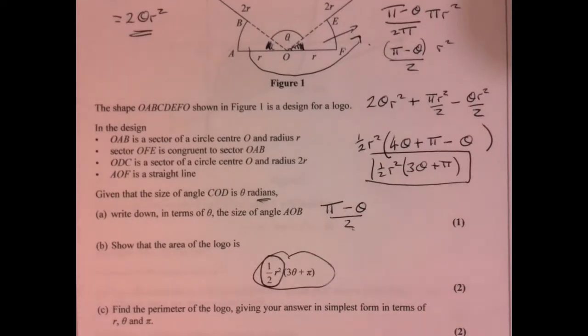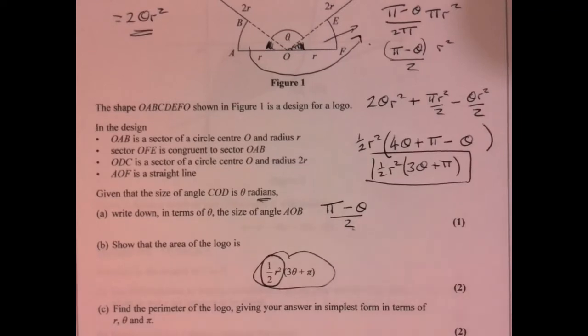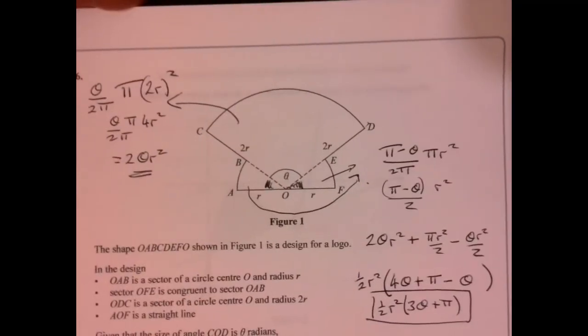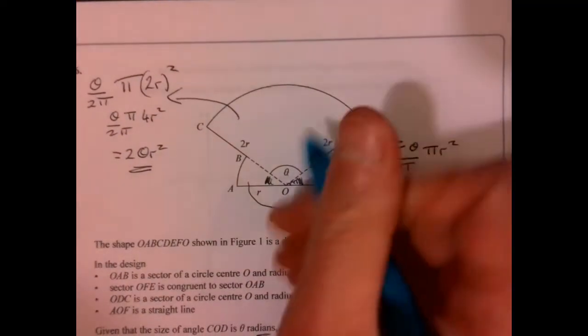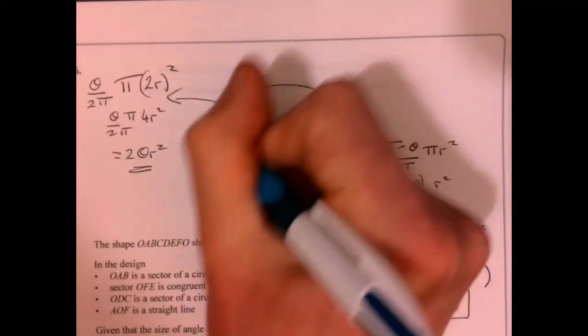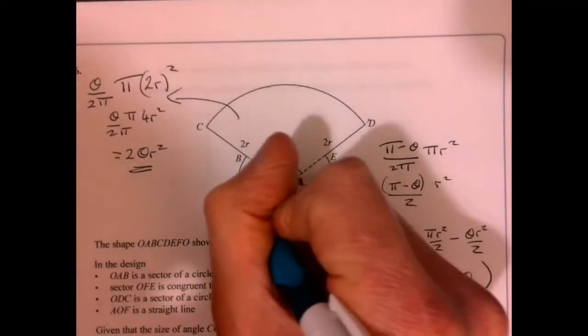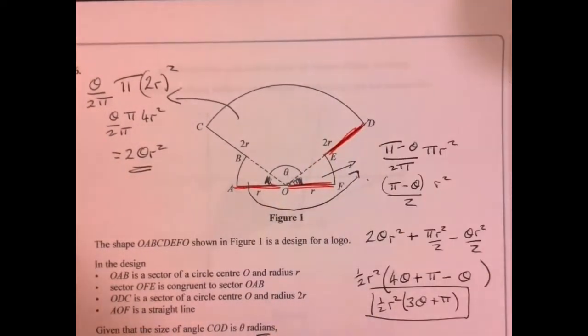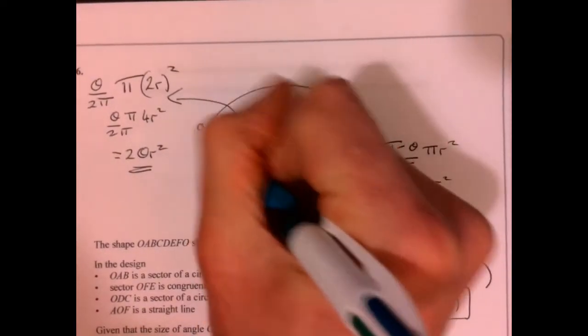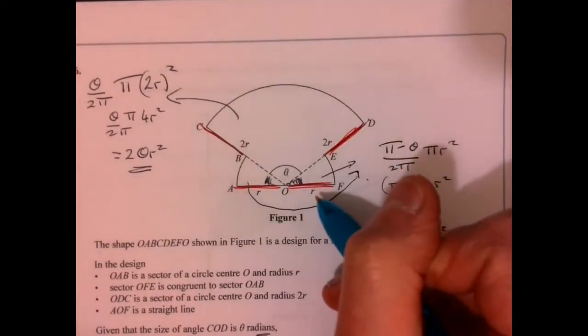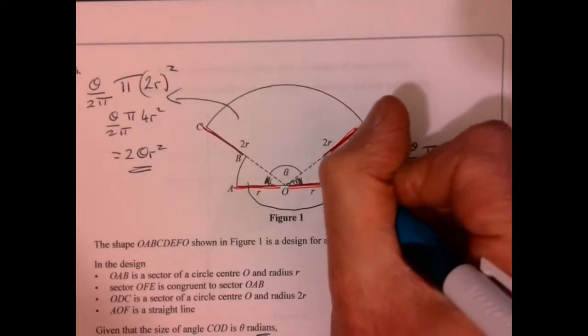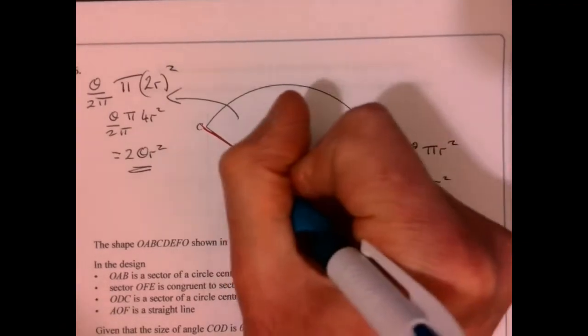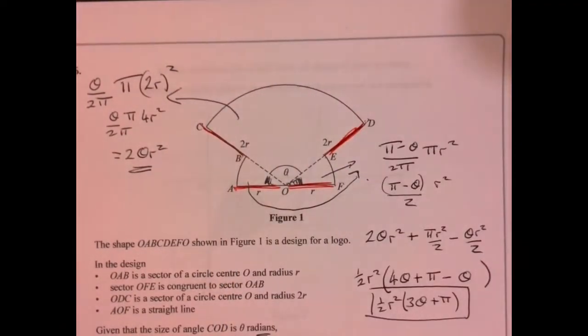Now, the final bit of the question says find the perimeter of the logo, giving your answer in its simplest form. So just have a quick look at this for a second. What have we got? So it's distance all the way around the outside. So let's think. I've got one r, two r, three r's, and four r's. That's that bit. And then we've then got arc, arc, arc.